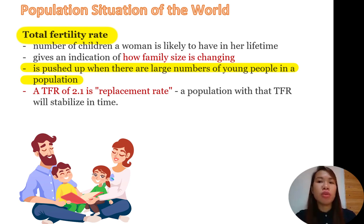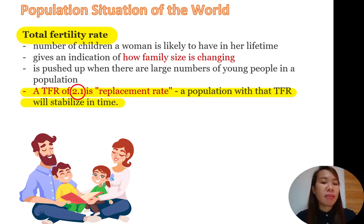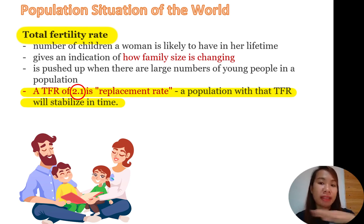Unlike for women who have their first pregnancy at, say, 35 years old and above — that means they have a lesser chance of having more children. Now, a total fertility rate of 2.1 is what we call the replacement rate. In short, it means the number being born equals the number dying. If the total fertility rate is 2.1, the population will stabilize in time.